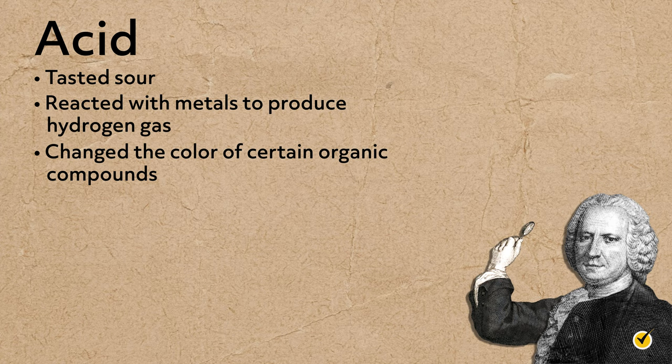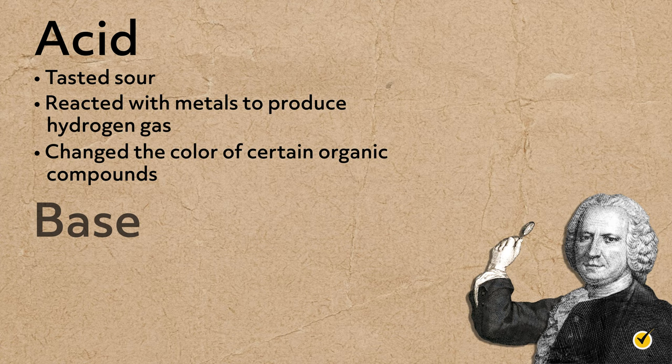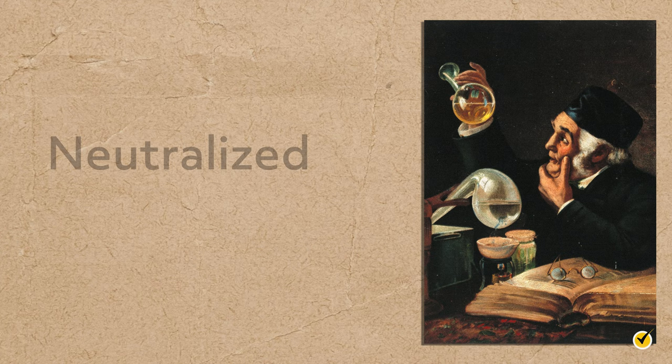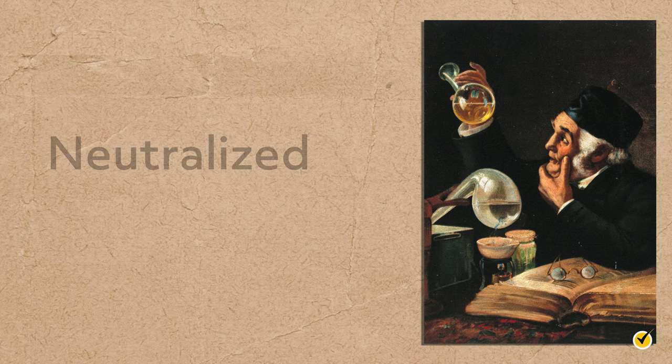An acid was any substance that tasted sour, reacted with metals to produce hydrogen gas, and changed the color of certain organic compounds, now known as indicators. On the other hand, bases were any substance that tasted bitter, felt slippery, and turned those same organic compounds a different color. Chemists began exploring acid-base chemistry and further added to their definition that when mixed together, acids and bases were neutralized, canceling out each other's properties.